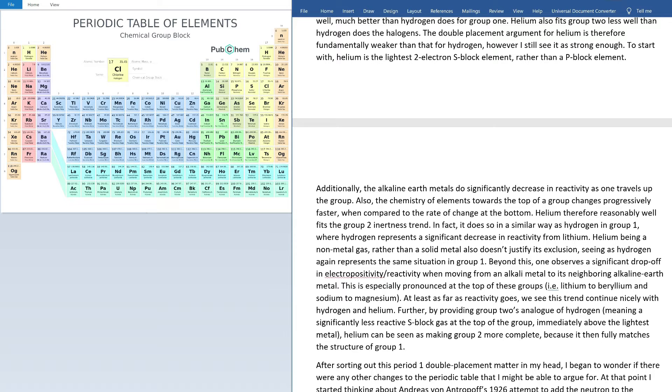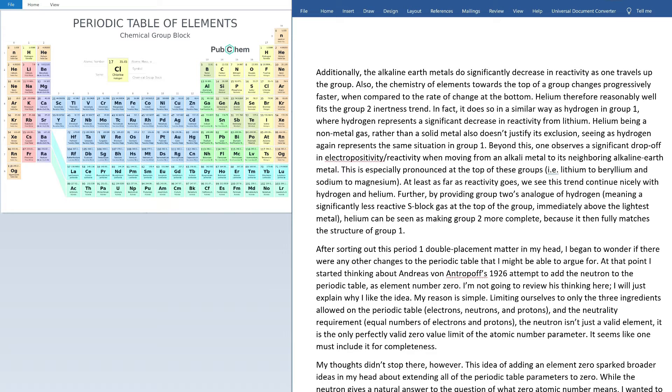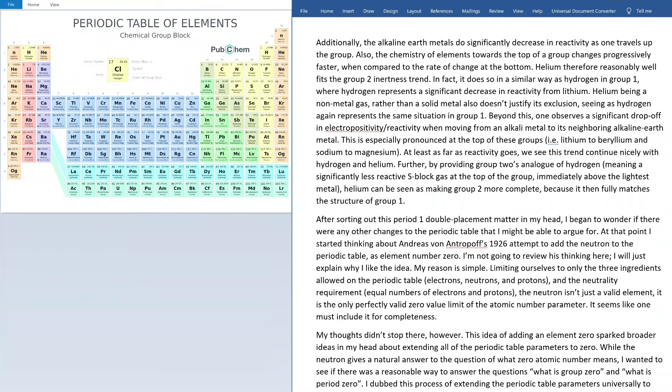Also, the chemistry of elements towards the top of groups changes progressively faster when compared to the rate of change at the bottom. This is a common trend across the periodic table. Helium, therefore, reasonably well fits the group two inertness trend. In fact, it does so in a similar way as hydrogen in group one, where hydrogen represents a significant decrease in reactivity from lithium. Helium being a non-metallic gas rather than a solid metal also doesn't justify its exclusion, seeing as hydrogen again represents the same situation in group one. Beyond this, one observes a significant drop-off in electropositivity/reactivity when moving from an alkali metal to its neighboring alkaline earth metal. This is especially pronounced at the top of these groups, i.e., when going from lithium to beryllium and from sodium to magnesium. At least as far as reactivity goes, we also see this trend continue nicely with hydrogen and helium.